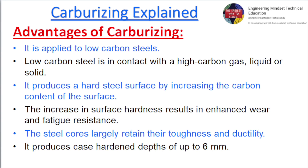Advantages of carburizing. It is applied to low carbon steels. Low carbon steel is placed in contact with a high carbon gas, liquid, or solid, producing a hard steel surface by increasing the carbon content of the surface. The increase in surface hardness results in enhanced wear and fatigue resistance. The steel core largely retains its toughness and ductility, and it produces case-hardened depths of up to 6mm.